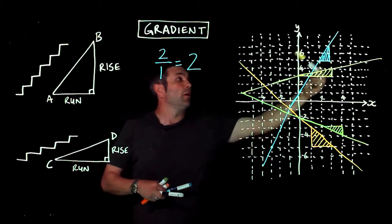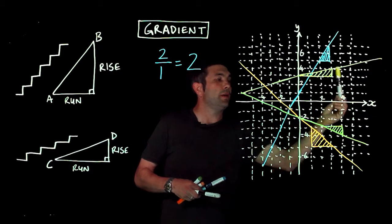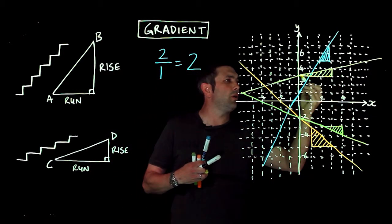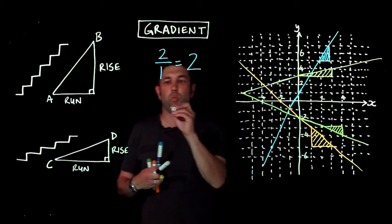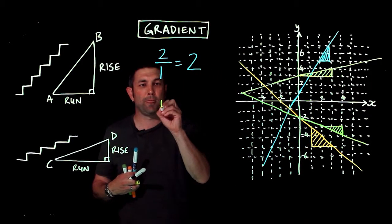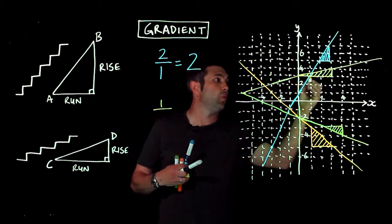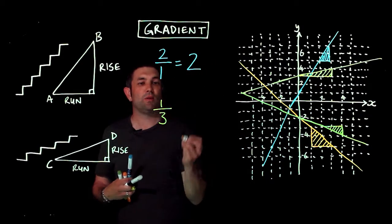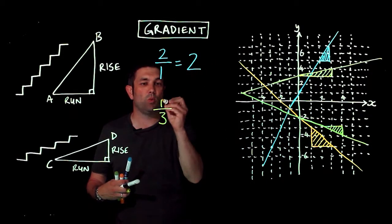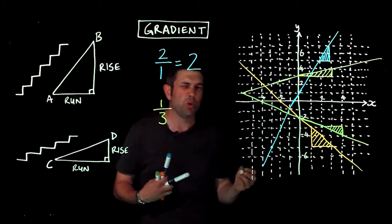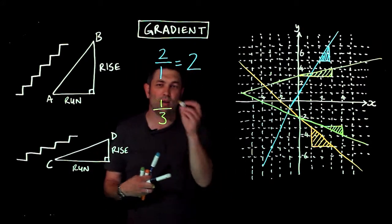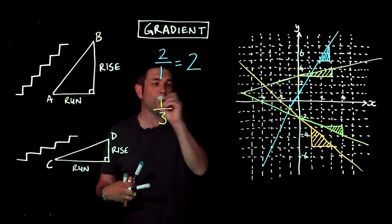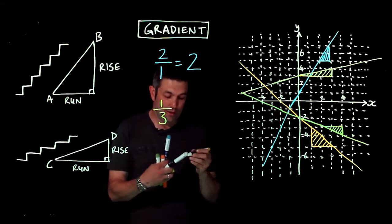Looking at the yellow line, the rise is one and the run is one, two, three. That can't be simplified, so the gradient is one over three. I'd leave it as a fraction — the gradient of the yellow line is a third.